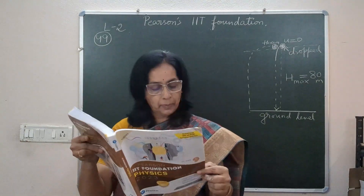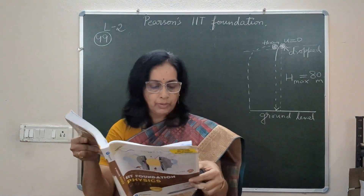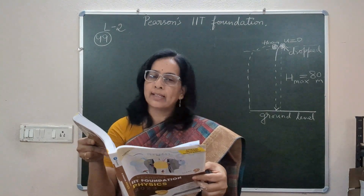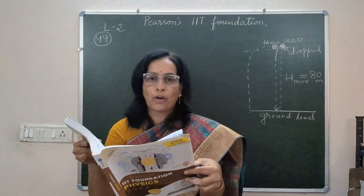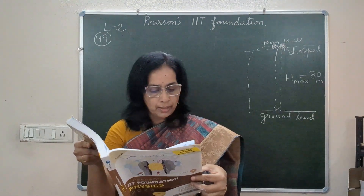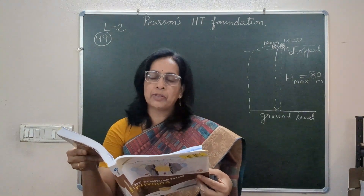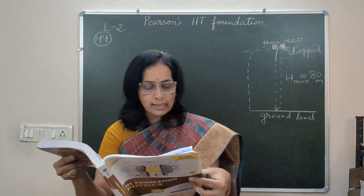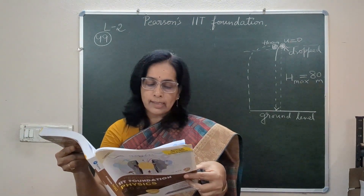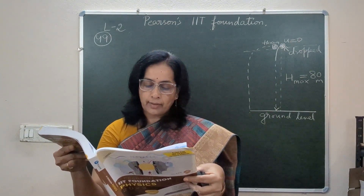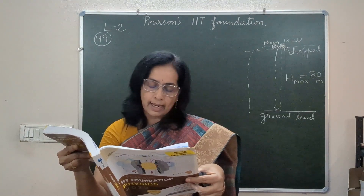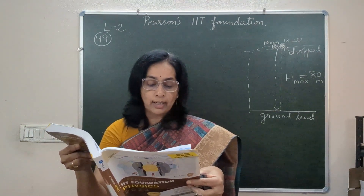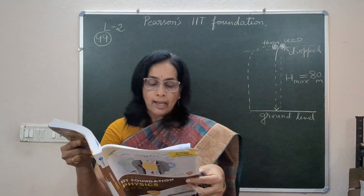We are in the Class 9th PSL IIT Foundation book, Kinematics chapter, Level 2. The 48th question was discussed in the previous video. Now I am on the 49th question — I will put this question in the description box. The question says: a ball is dropped from the top of a tower of height 80 meters; at the same time, another ball is projected horizontally from the tower.